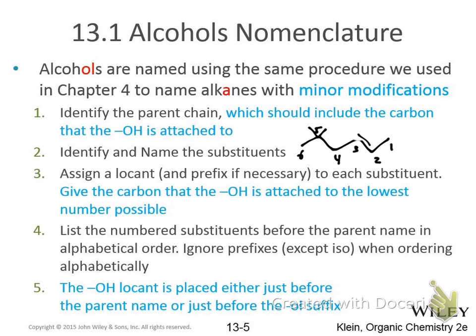There's a bunch of stuff with the same priorities as alkanes — alkyl groups, methoxy groups like ethers, alkyl halides, halogens with the same priorities, and nitro. The priority order we've dealt with so far: alkenes and halogens are lowest, then alkynes, then alkenes, then alcohols. Alkynes and alkenes have the same priority unless there's a tie, and then the alkene wins. The highest priority is alcohols — if you have an alcohol, it always gets the lowest number.